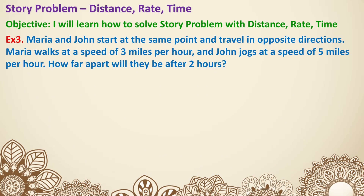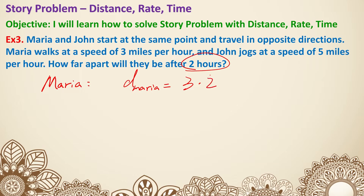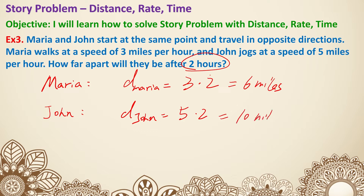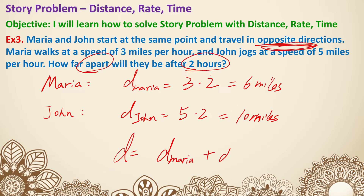Example three: Maria and John start at the same point and travel in opposite directions. Maria walks at 3 miles per hour and John jogs at 5 miles per hour. How far apart will they be after two hours? Maria's distance is 3 times 2 equals 6 miles. John's distance is 5 times 2 equals 10 miles. Since they're traveling in opposite directions, the overall distance is 6 plus 10 equals 16 miles.